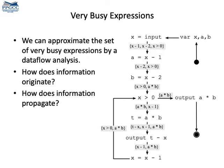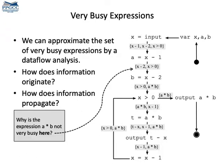Here they are. The expressions in gray boxes are very busy at the program point where the gray box is located. As you see, A times B is very busy right before the loop. But can you figure out why A times B is not very busy at this point right here?